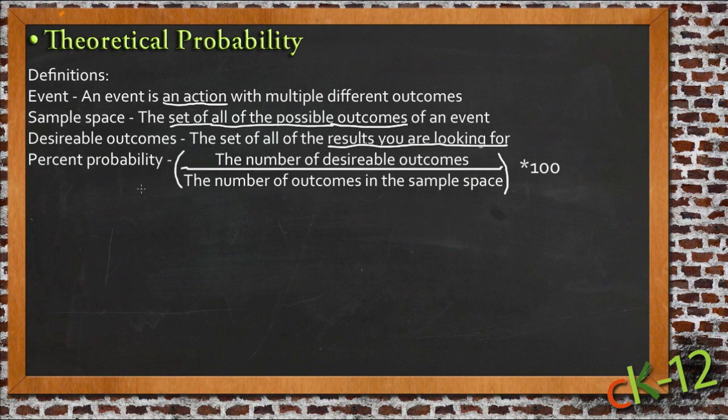And then finally, the percent probability is that actual theoretical probability that we're calculating. It's the likelihood of whatever desirable outcome you want occurring out of the total number of possibilities in the sample space. To calculate the percent probability, we just take that total number of desirable outcomes, and we divide it by the number of outcomes in the sample space.